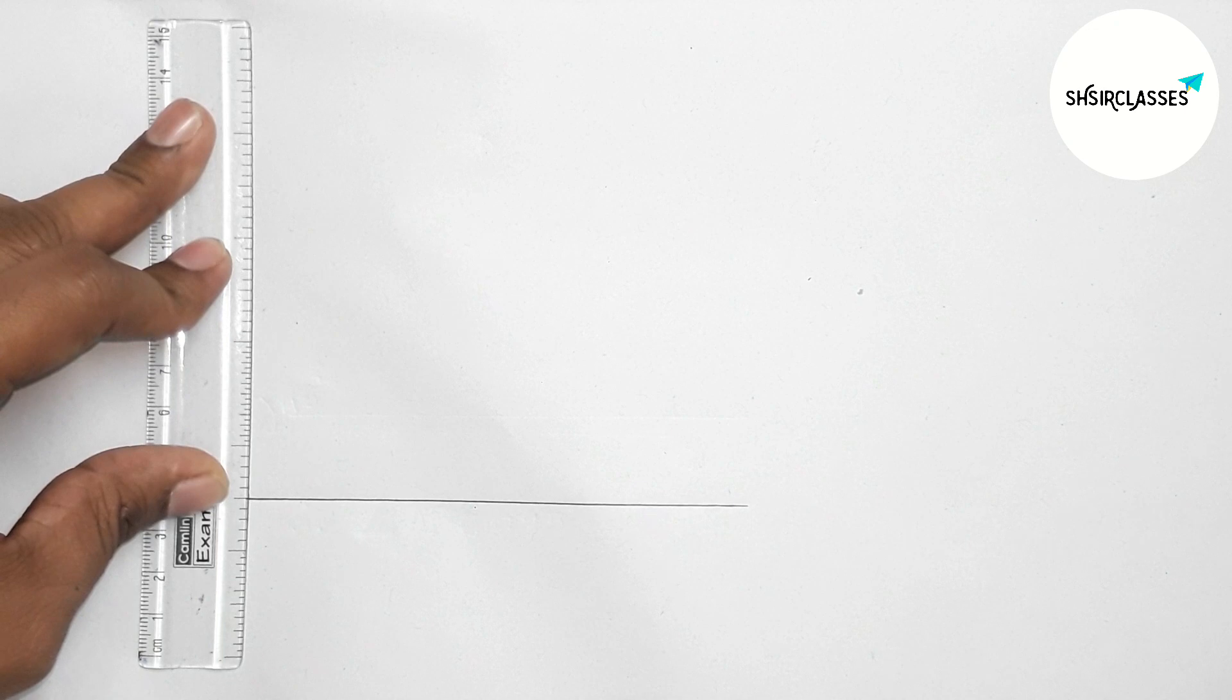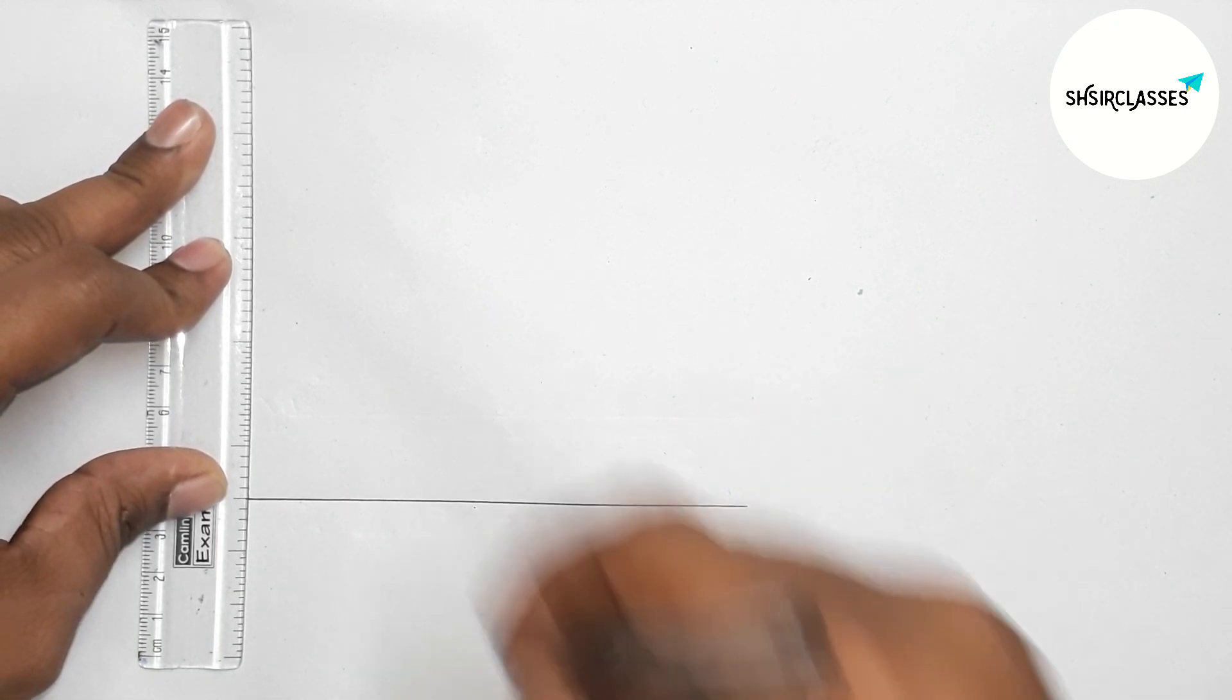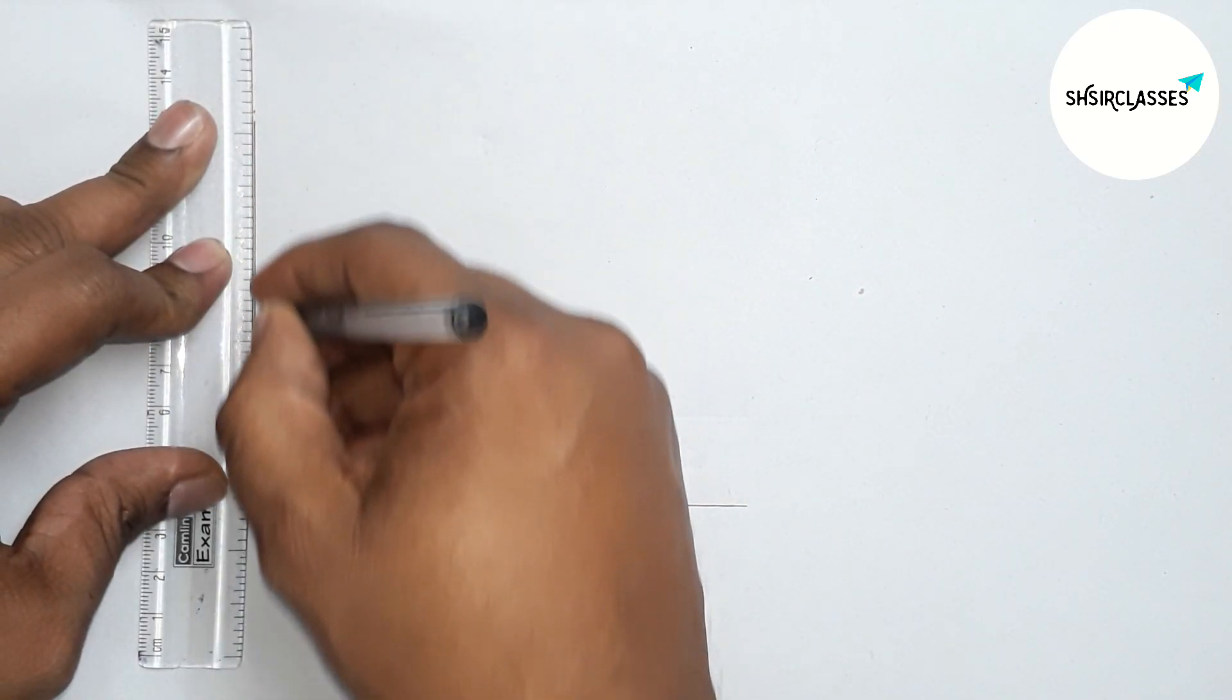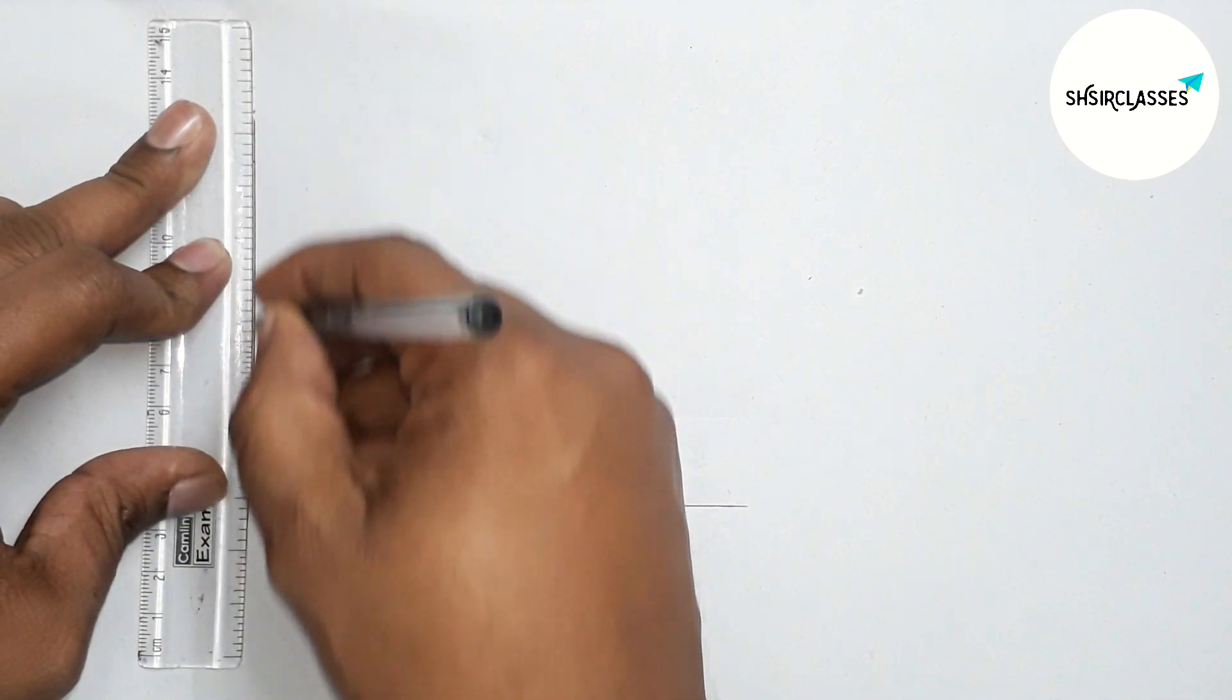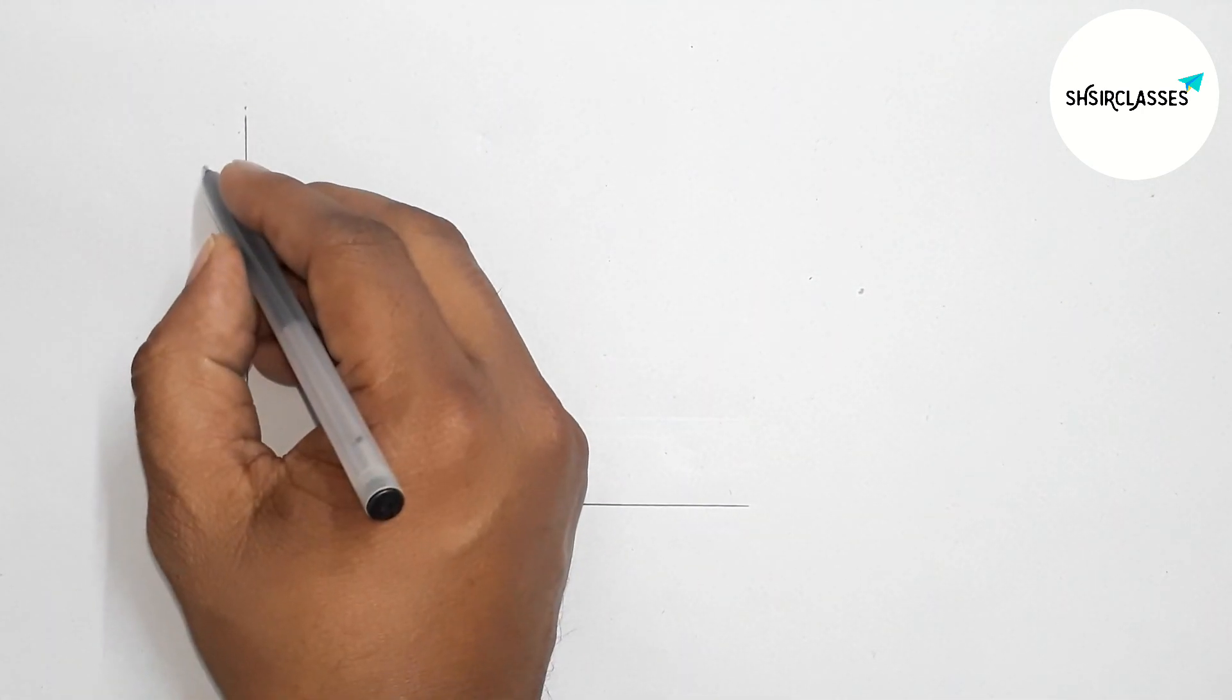Now putting scale, so now joining this line to get 90 degree angle. Okay, so now labeling this, taking point here A, B, C and marking here.